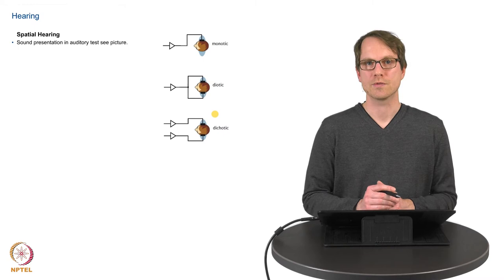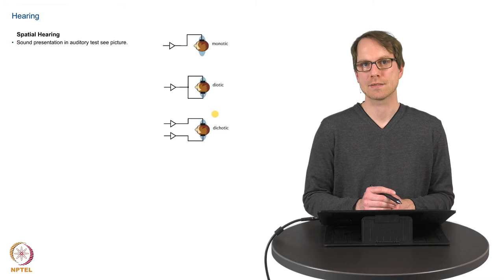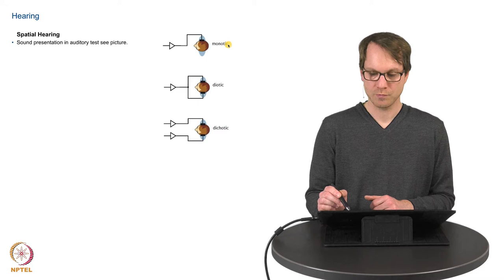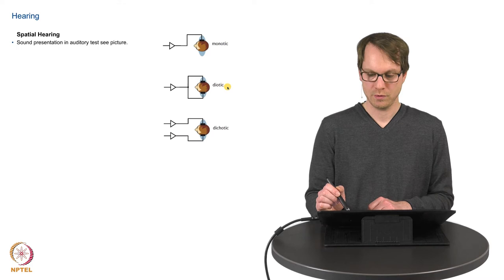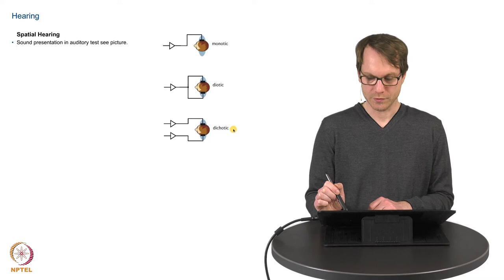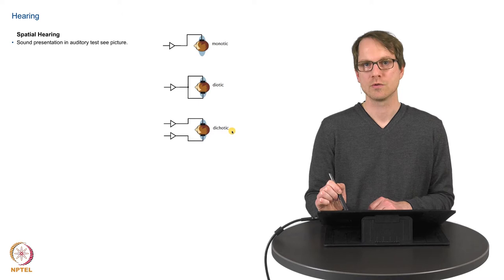So if you want to analyze or study how auditory perception actually works, we have three basic designs. We have the monotic presentation of sounds, so one sound to one ear. We have the diotic presentation, the same sound to both ears. And we have the dichotic presentation, two different sounds to the two ears.